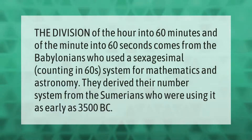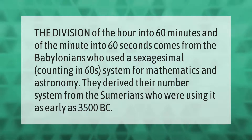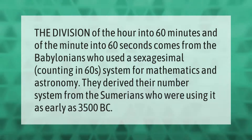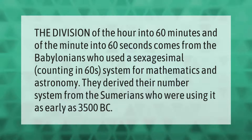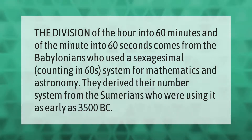The division of the hour into 60 minutes and of the minute into 60 seconds comes from the Babylonians, who used a sexagesimal — counting in 60s — system for mathematics and astronomy. They derived their number system from the Sumerians, who were using it as early as 3500 BC.